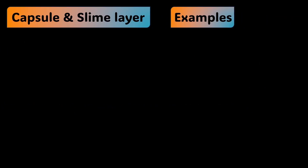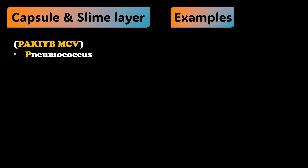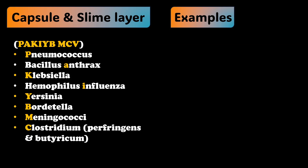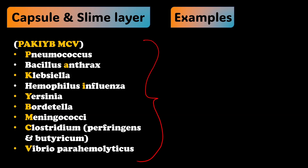Let's jump to the second topic: examples of capsulated bacteria. To remember these, we have a mnemonic — PACIB MCV. P stands for Pneumococcus, A stands for Bacillus anthracis, C stands for Klebsiella, I stands for Haemophilus influenzae, B stands for Bordetella, M stands for Meningococcus, and then we also have Clostridium — specifically two species, and Vibrio parahemolyticus. Note that Clostridium difficile and C. tetani are non-capsulated.